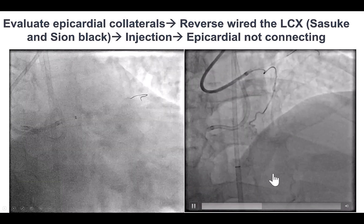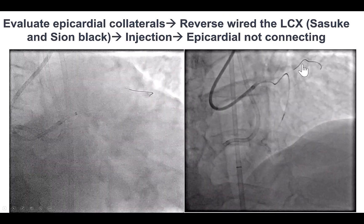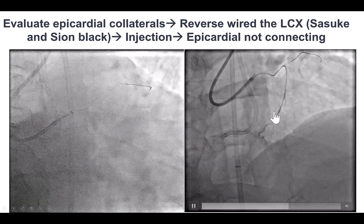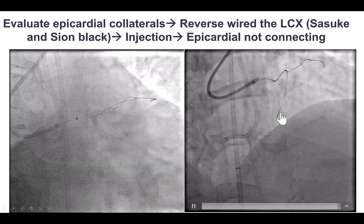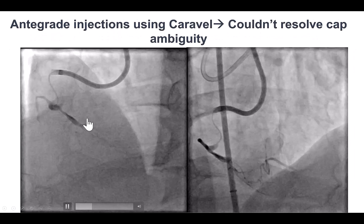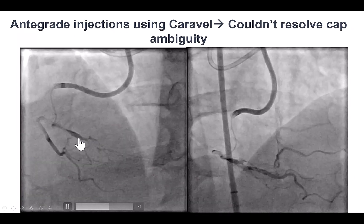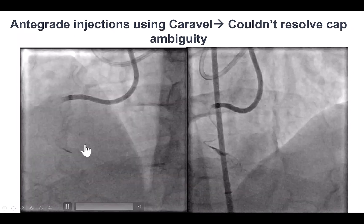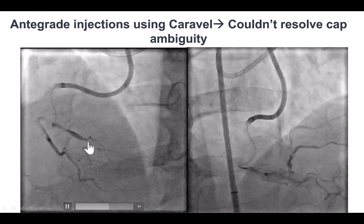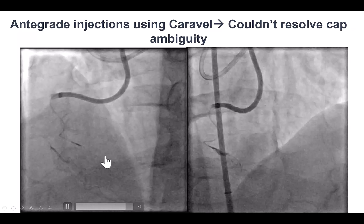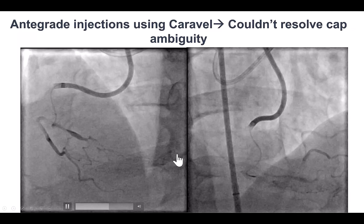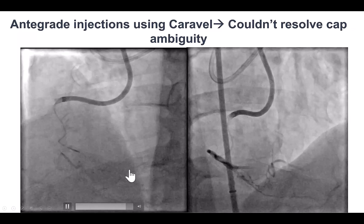We made a repeat attempt to visualize the epicardial collaterals and placed a microcatheter into this epicardial collateral, but it did not seem to connect. We then inserted an antegrade microcatheter and did some antegrade injections, but still had difficulty resolving the ambiguity. There seemed to be a lot of bridging collaterals distally, and our concern was that advancing guide wires would send us into these bridging collaterals and potentially cause a perforation.